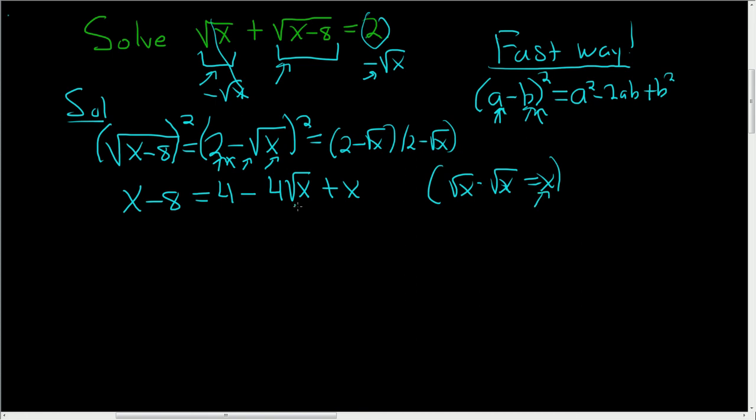At this point, keep in mind we're looking for x, but it's trapped under the square root still. So what we'll do is simplify and solve for the square root of x. So we have negative 8 equals 4 minus 4 square root of x. So we're solving for this.